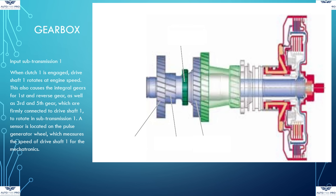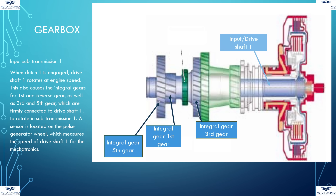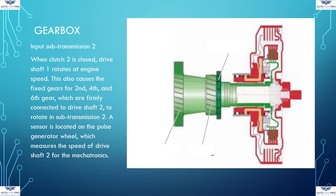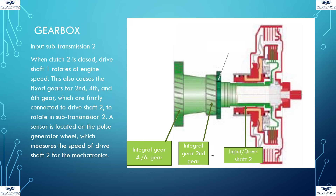In sub-transmission 1, driveshaft 1 — colored blue in the image — is connected to the integral gears of 1st, 3rd, 5th, and reverse gears. When driveshaft 1 rotates, these integrated gears also rotate. There is also a pulse generator wheel on driveshaft 1, with a sensor that communicates the speed of driveshaft 1 to the mechatronic control unit. In sub-transmission 2, driveshaft 2 is designed as a hollow shaft. When driveshaft 2 rotates, the integrated gears of 2nd, 4th, and 6th gears also rotate. There is likewise a pulse generator wheel to communicate the speed of driveshaft 2 to the mechatronic control unit.